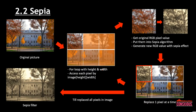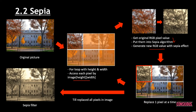Next we go to sepia. We have the original image, go through the for loop, and access pixels by image[i][j]. For sepia, we get the original RGB pixel values, then plug them into the sepia algorithm to generate new values with the sepia effect. We then replace each pixel one by one until the whole image is processed.